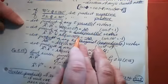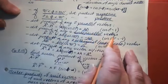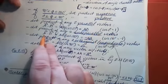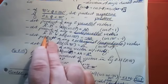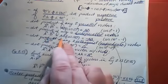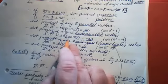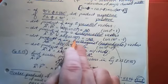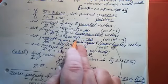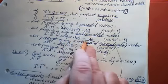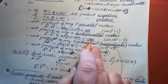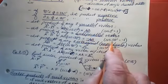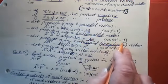The dot product of any two anti-parallel vectors — pointing in exactly opposite directions — equals the magnitude of A times the magnitude of B times cosine(180), because they are 180 degrees apart. That equals the negative of the magnitude of one vector times the other, because cosine of 180 degrees is negative one.